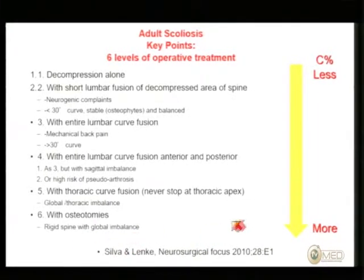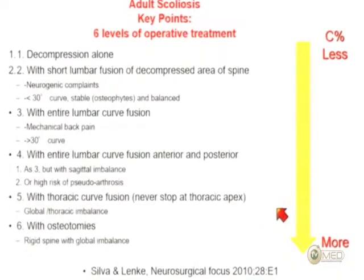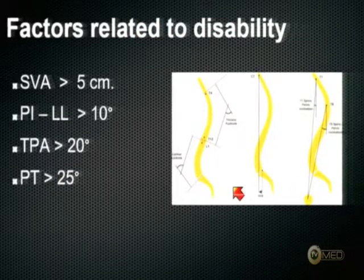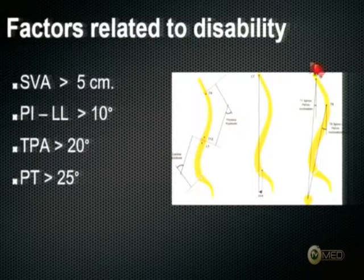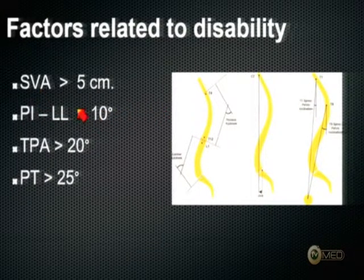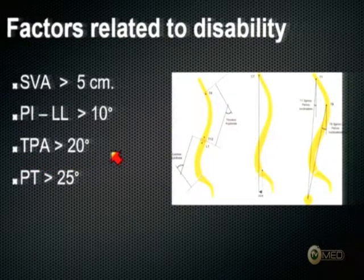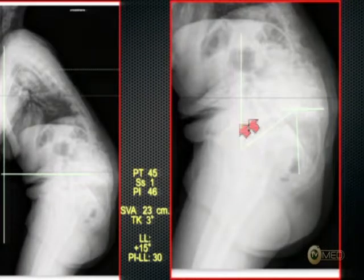We have to deal with the rigid spine with global imbalance. We know from literature that the factors related to disability are now very well studied: SVA more than five centimeters; the mismatch between pelvic index and lumbar lordosis more than 10 degrees; pelvic incidence minus lumbar lordosis pelvic angle more than 20 degrees; and pelvic tilt more than 25 degrees. These are all related to a bad quality of life.